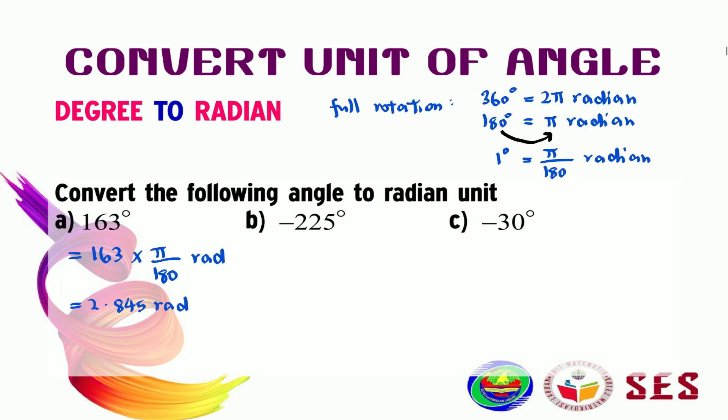Let's see question B. This one is a negative angle. To change this angle into radian, just need to multiply this number by π over 180 radian. We can simplify these two numbers to be just minus 5 over 4 π radian.